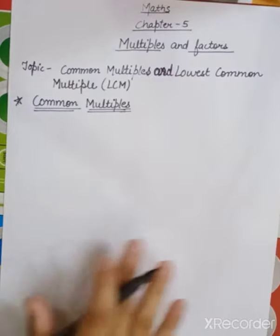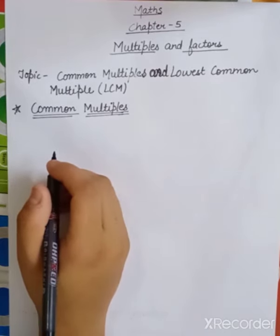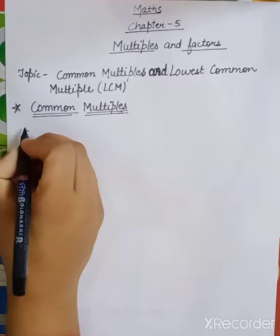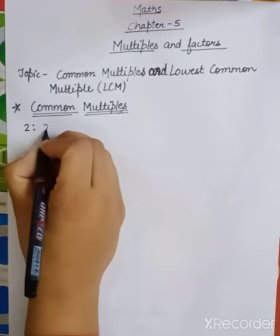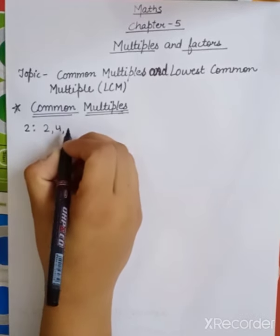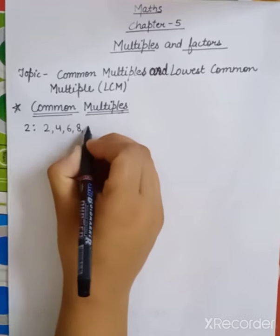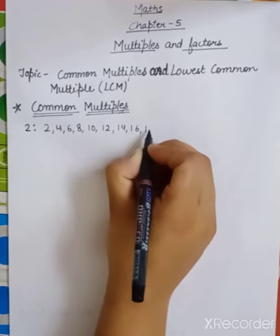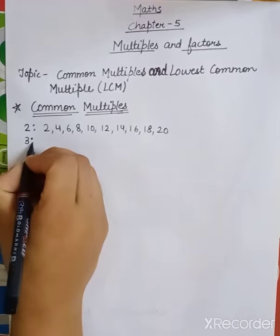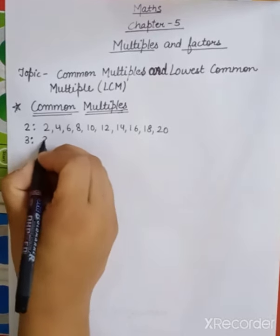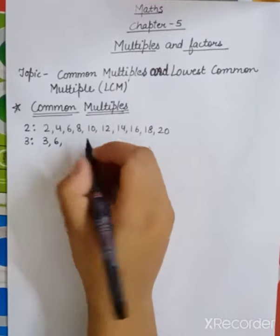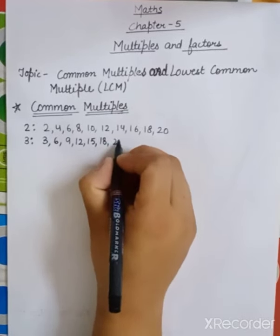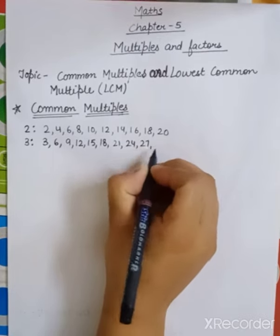Let us consider 2 and 3, and write out their multiples. The multiples of 2 are: 2, 4, 6, 8, 10, 12, 14, 16, 18, 20. The multiples of 3 are: 3, 6, 9, 12, 15, 18, 21, 24, 27, 30.